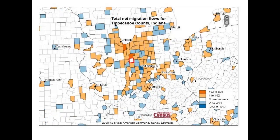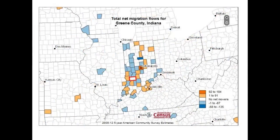Tippecanoe County, home to Lafayette, West Lafayette, and Purdue University, also shows distance decay — neighboring counties show more in-and-out migration. Even in a very rural county like Greene County, you can observe distance decay clearly among all those neighboring counties.